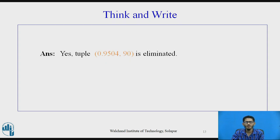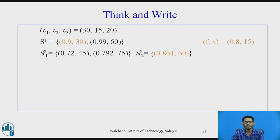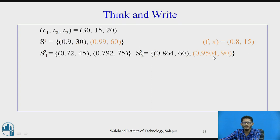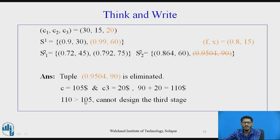Yes, the tuple (0.9504, 90) is eliminated. The reason is that the overall maximum cost available is 105 and the cost of device d3 is 20 dollars. If 20 is added to 90, it gives 110 dollars, which is greater than 105, so we cannot design the third stage. Therefore this tuple is eliminated.